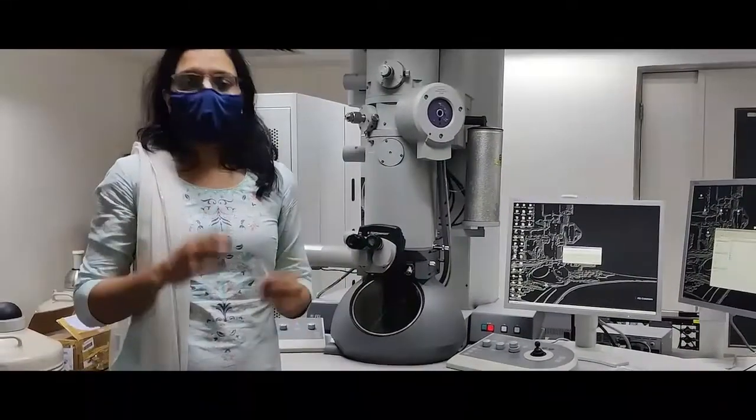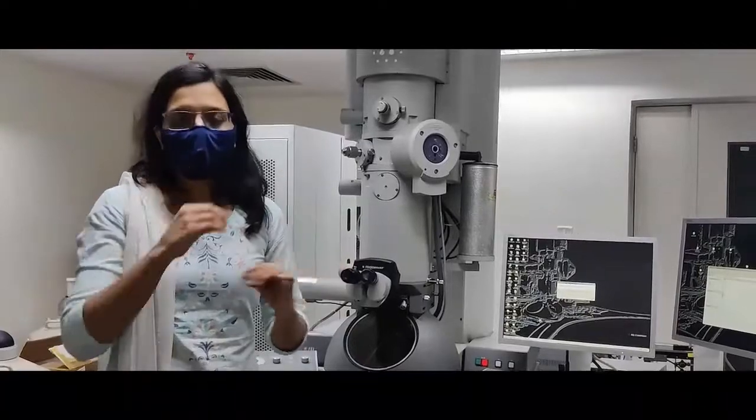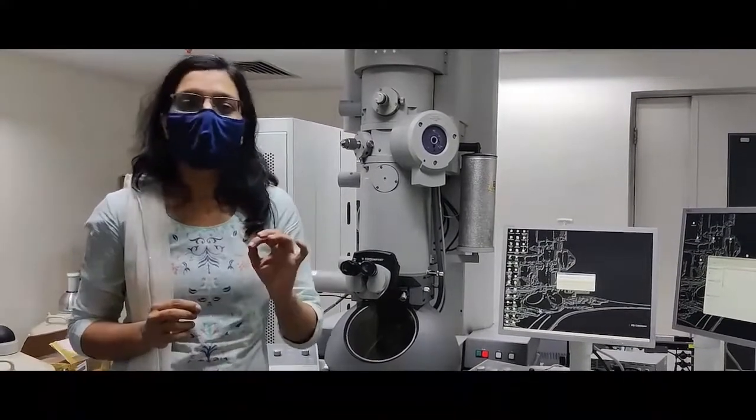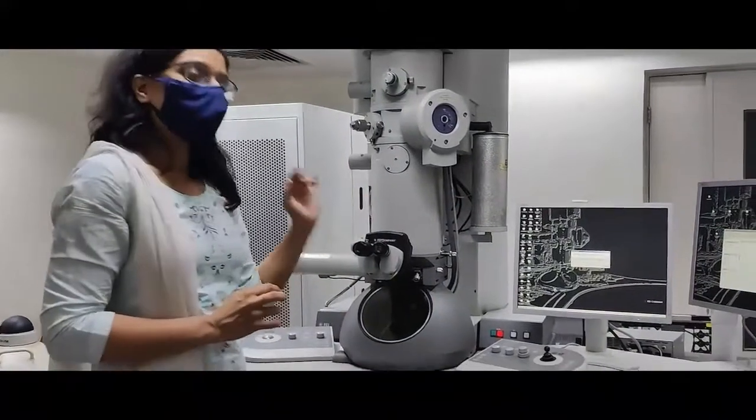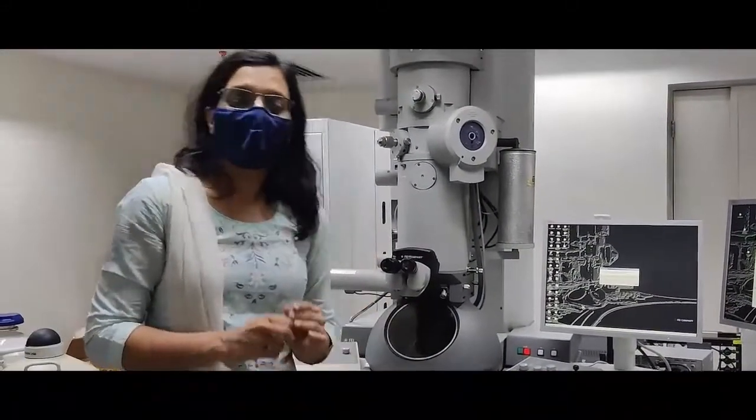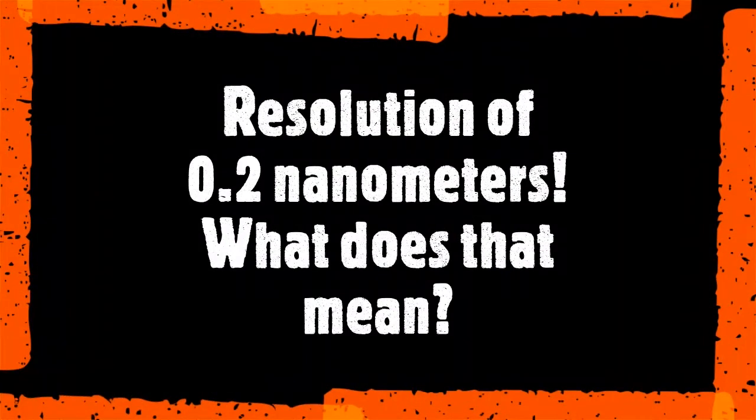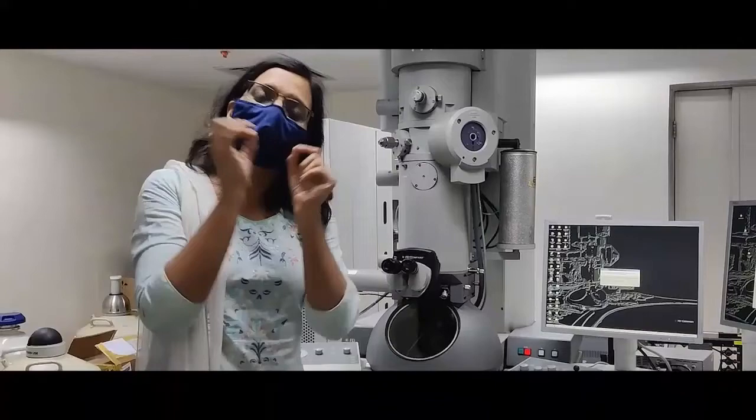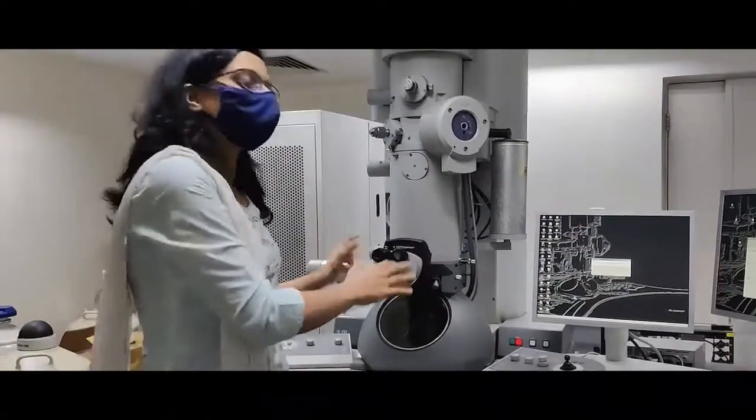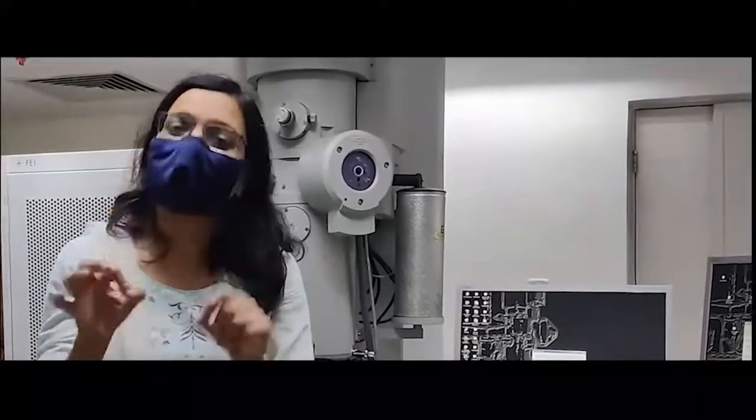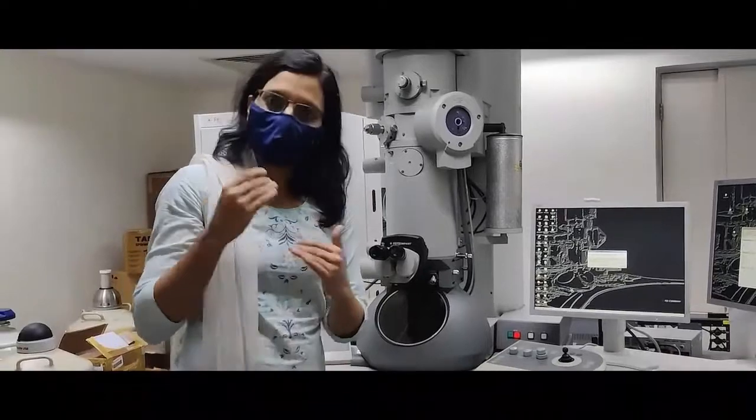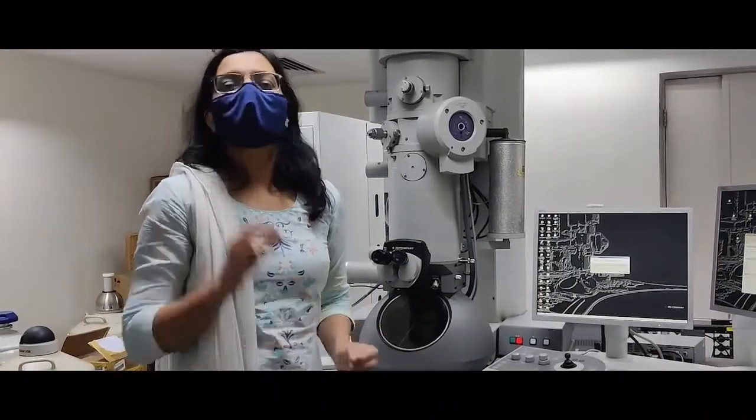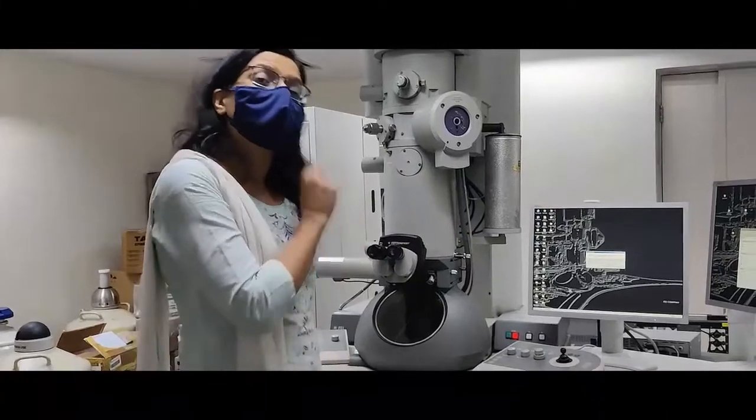But, it is not just the magnification. As everyone knows, you can just keep on magnifying your images but that is of no use till you are still able to retain the clarity or the resolution. Here, the resolution actually is 0.2 nanometer. That means, if you have two objects, even if they are only 0.2 nanometer apart, this system can still tell you that yes, they are actually two points and not one. In terms of the resolution and clarity, the compound microscope gives you 200 nanometer. Here, it is 0.2 nanometers.